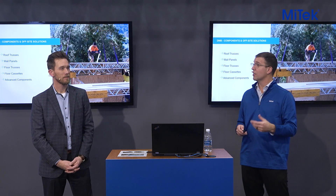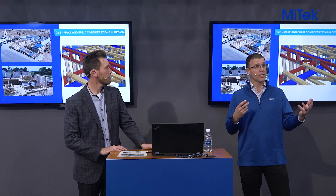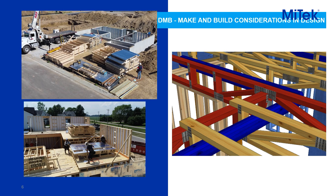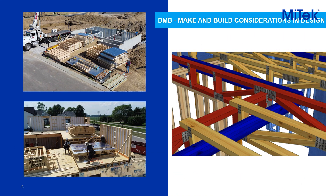Now we'll do a little quiz — we have a series of images and we want the audience to identify things from a design standpoint that need to be considered based on the components being used. This first photograph shows a relatively tight job site with foundations poured and wall panels and floor trusses staged on the job site. That is a massive advantage to using components — they can be built, delivered, and placed in a very specific location to help the framing crew put that building together.